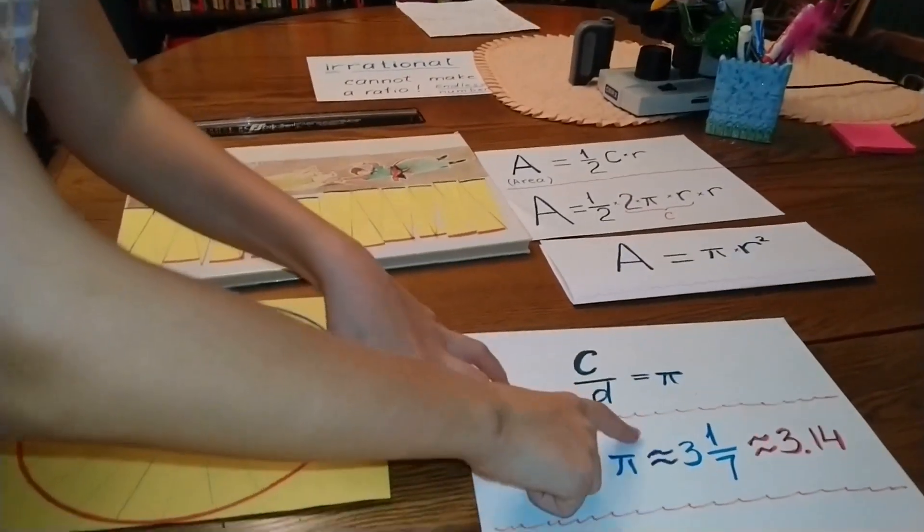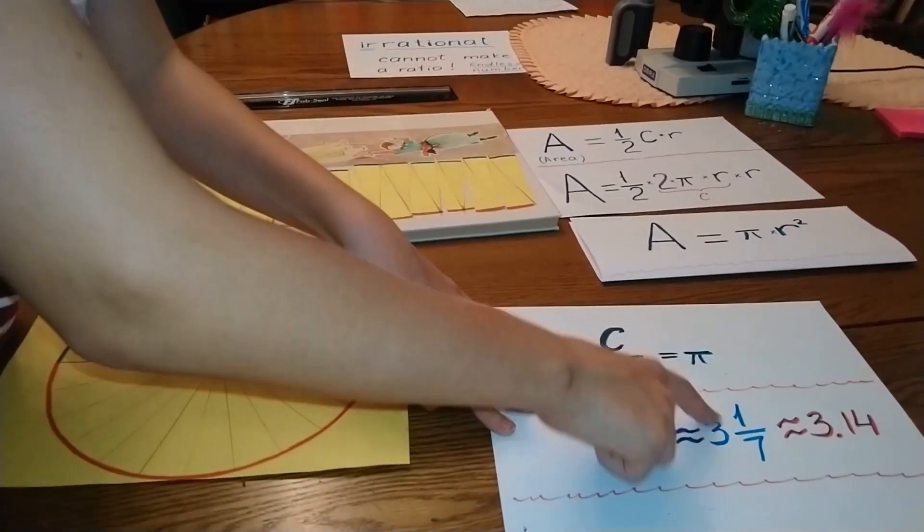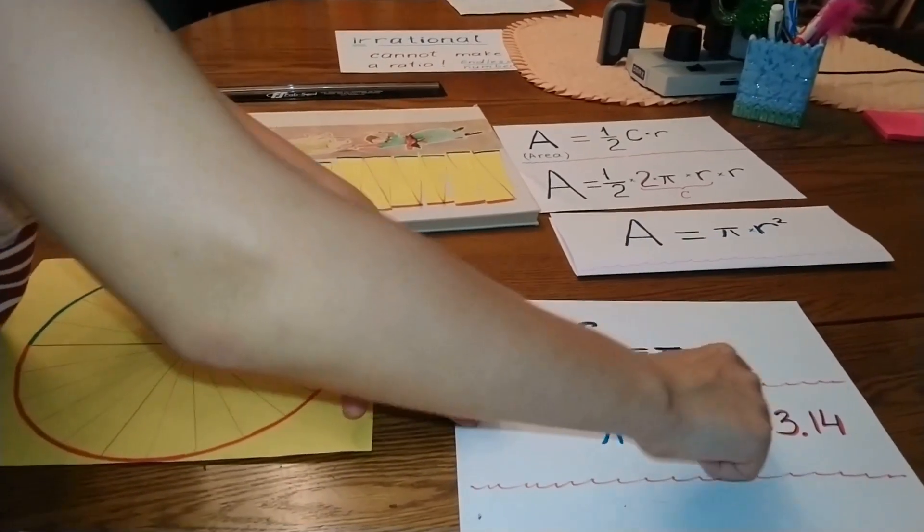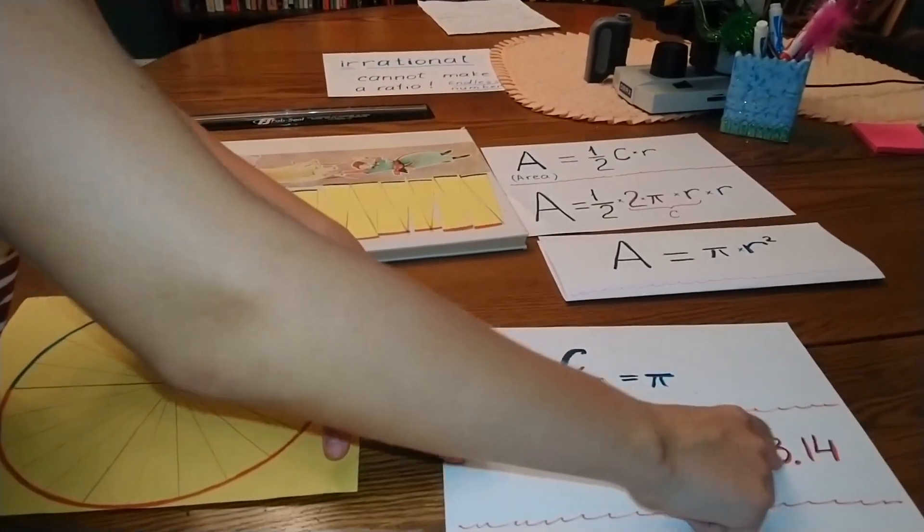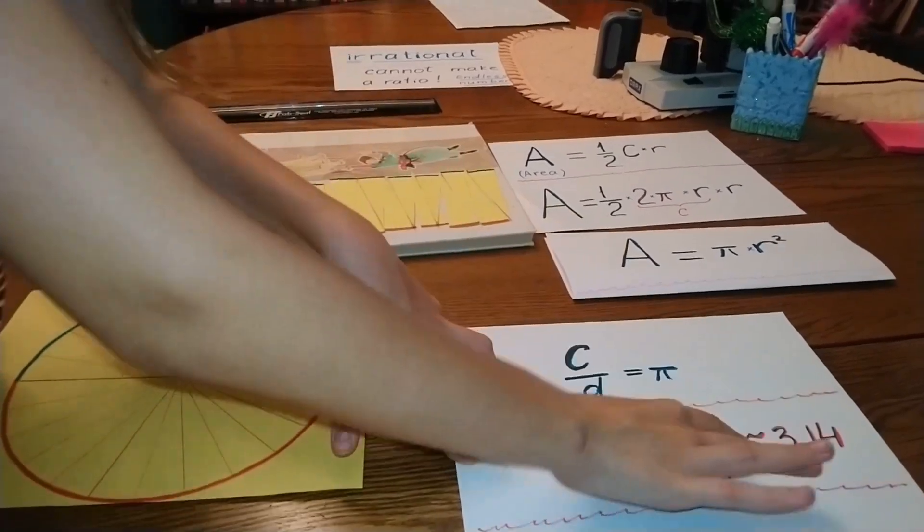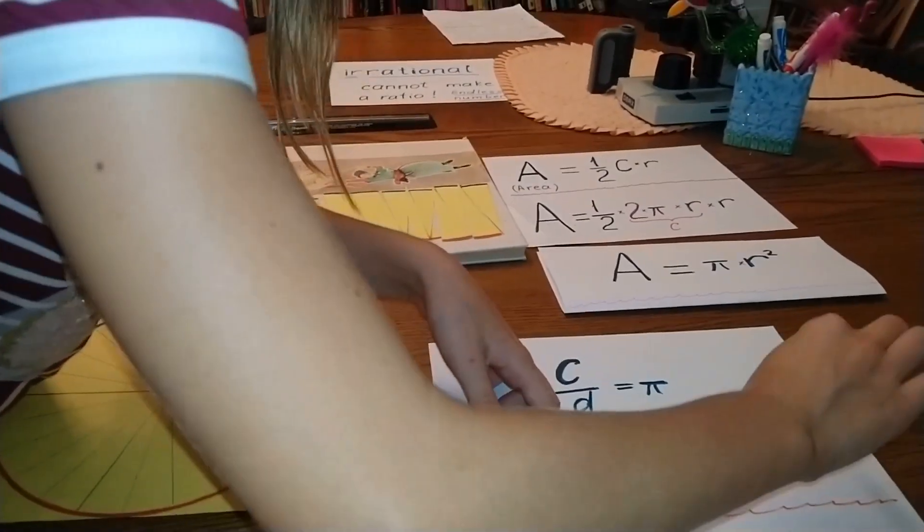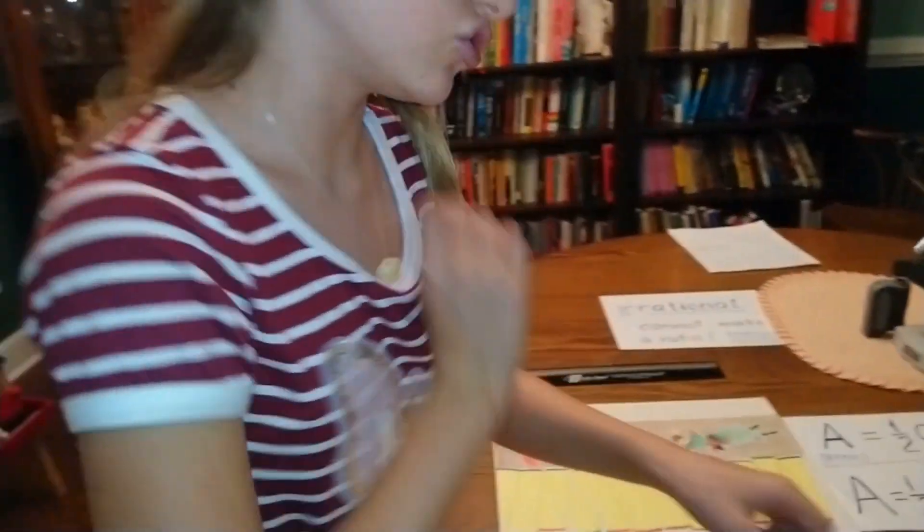Pi is about three and one-seventh, or about 3.14.